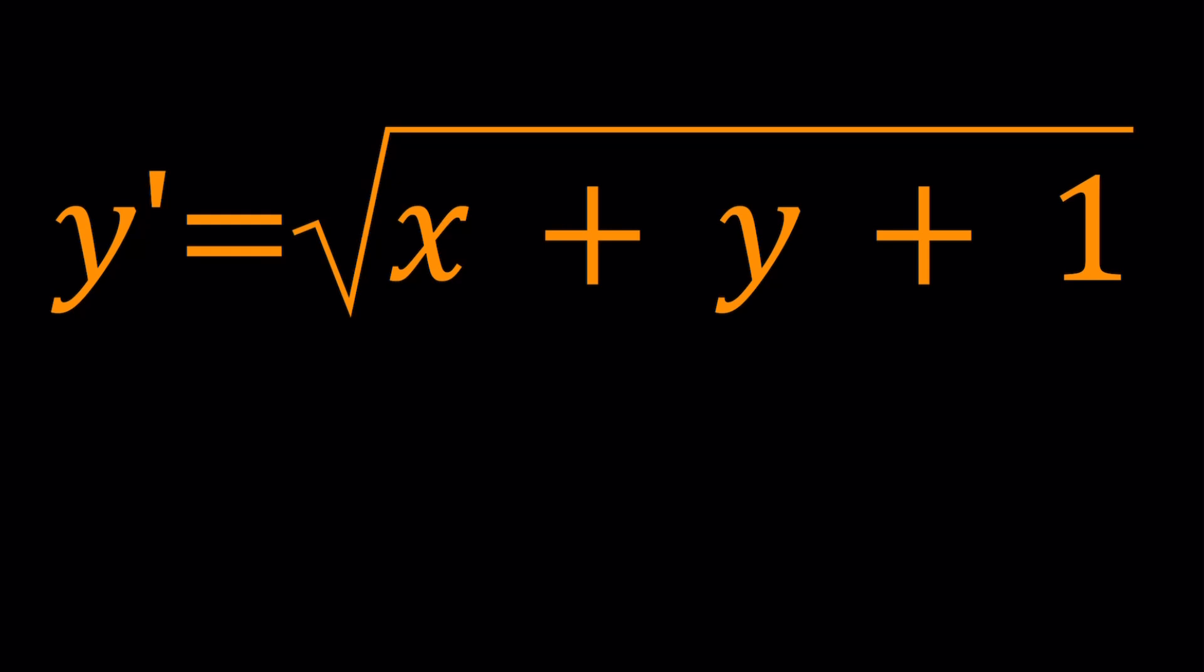Which we can also write as dy over dx. Now, to solve this problem, I'm going to use substitution. By using that, we're going to end up with an interesting result at the end. And then I'll pose a question and then we're going to be checking Wolfram Alpha. Okay, let's get started.